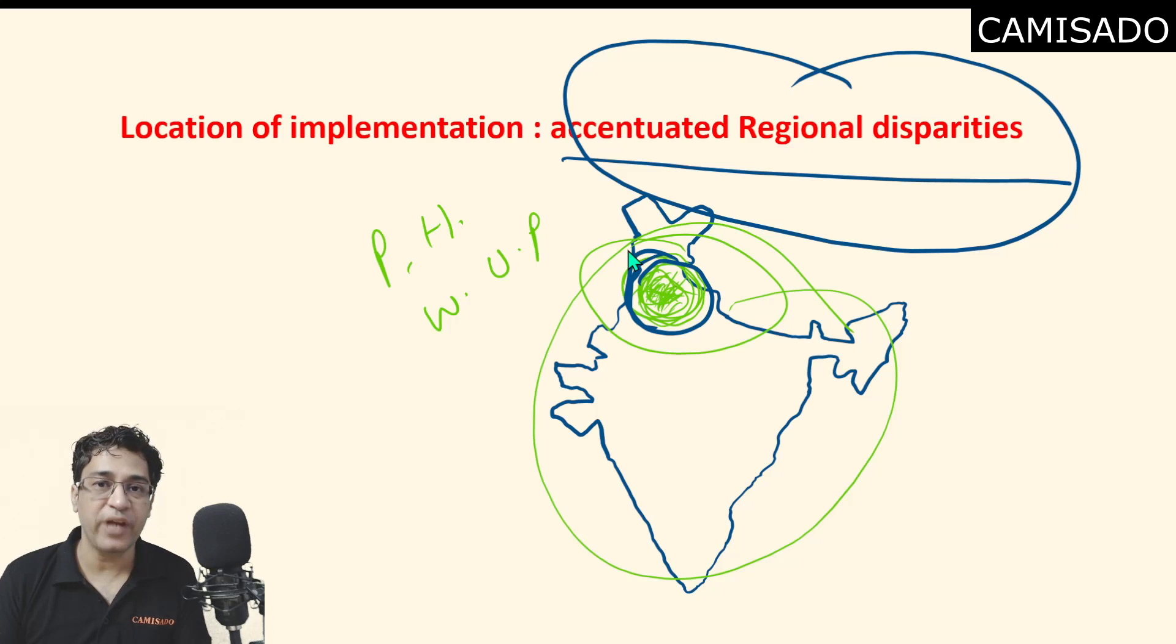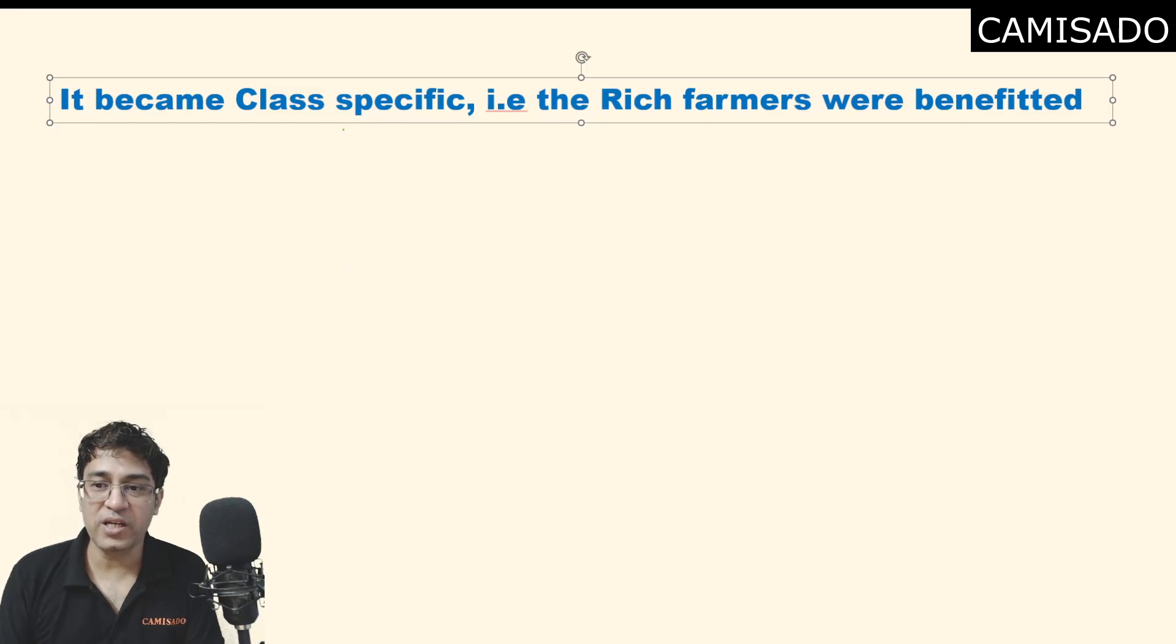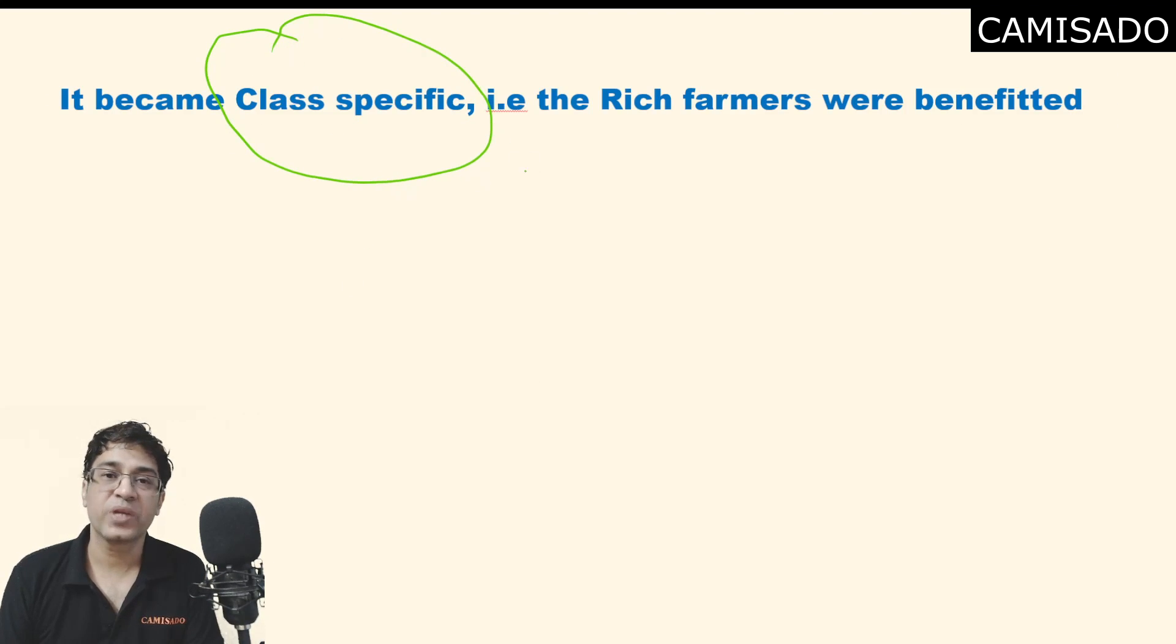But we had no other choice. We could not have chosen any other region. This was actually the best region for the selection of vigorous implementation of green revolution. The green revolution became class specific.